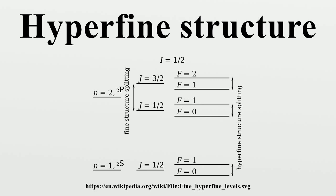Atomic nuclei with spin I ≥ 1 have an electric quadrupole moment. In the general case this is represented by a rank-2 tensor, with components given by Q_ij = ∫ρ(3x_i x_j − r²δ_ij)dV, where i and j are the tensor indices running from 1 to 3, x_i and x_j are the spatial variables x, y, and z depending on the values of i and j respectively. δ_ij is the Kronecker delta and ρ is the charge density. Being a three-dimensional rank-2 tensor, the quadrupole moment has 3² = 9 components. The quadrupole tensor is a symmetric matrix that is also traceless, giving only five components in the irreducible representation.